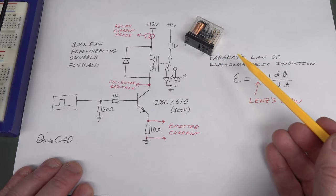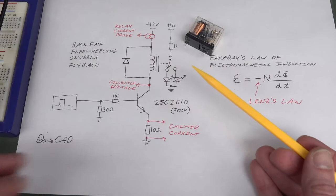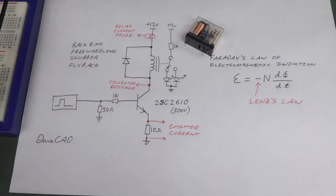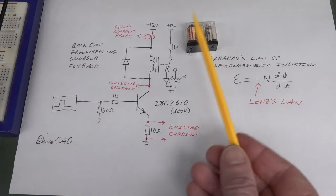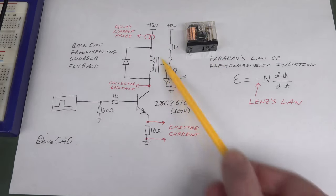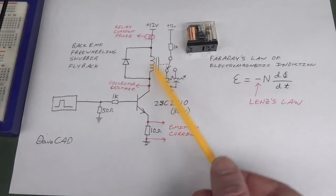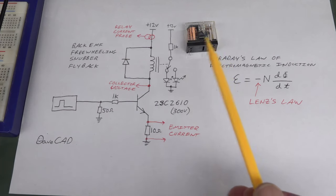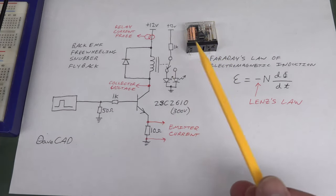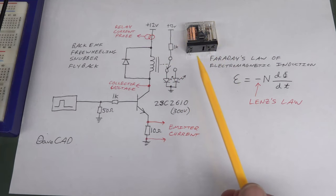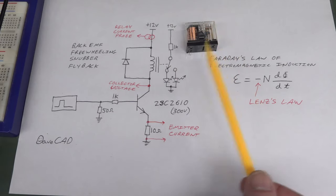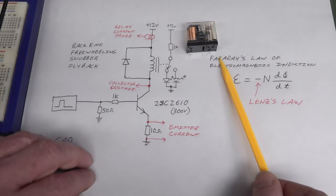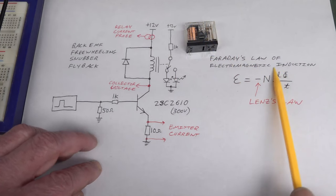We're going to have a look at one of the traps of these components. I mentioned this in the tutorial video but didn't have time to give a practical demonstration. Today we're going to look at some practical examples using a relay, but it doesn't have to be a relay — it could be a switching transformer, a switch mode power supply, or a motor.